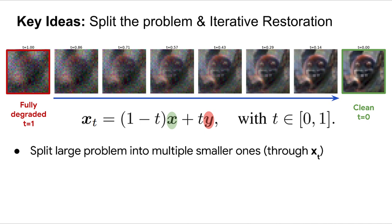x_t spans from t equals 1, the low quality input, to t equals 0, the clean sharp target image.